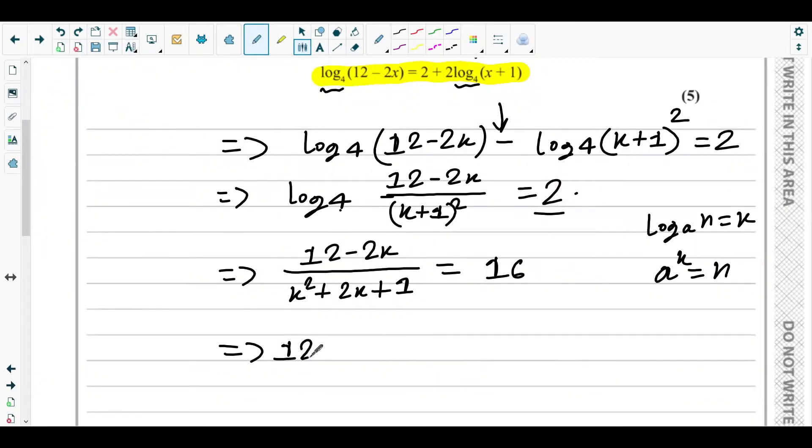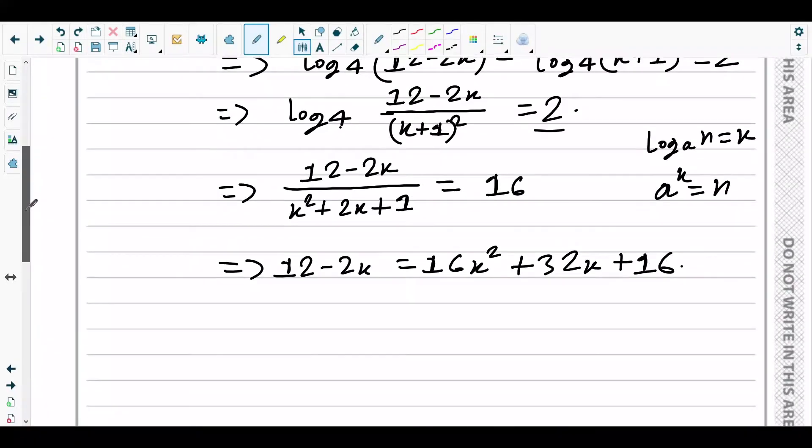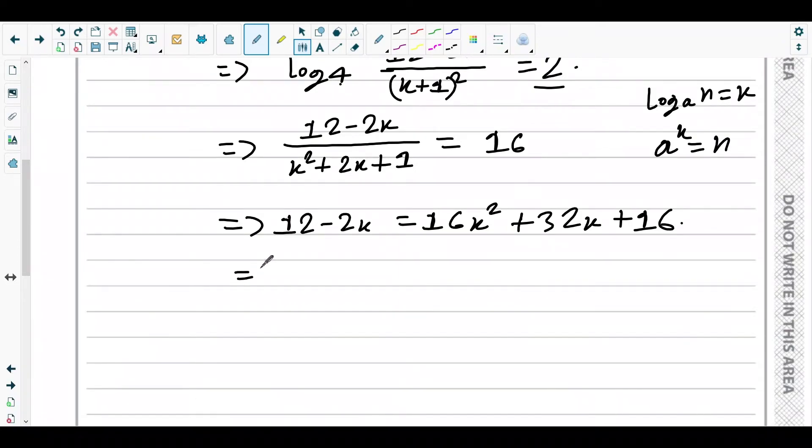Take all the terms on the same side. You will get 16x² + 34x + 4 = 0. Now divide both sides by 2, you will get 8x² + 17x + 2 = 0.